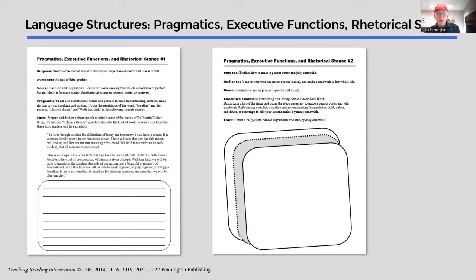Pragmatics are the social cues that are used, such as tone, word choice, body language, cultural assumptions, and traditions that authors bring to the text — which good readers become acquainted with and use to make sense and make meaning out of text.